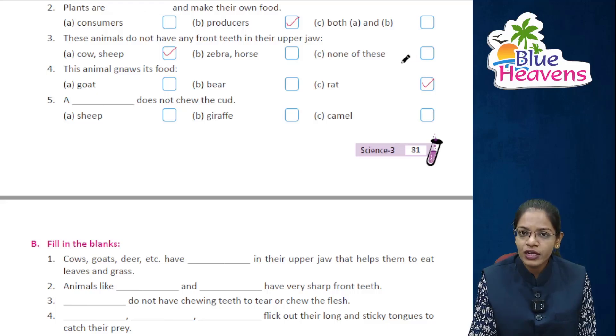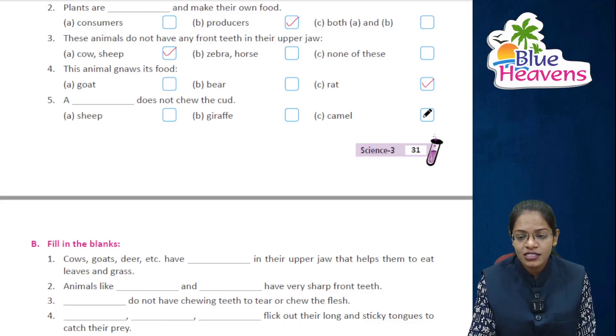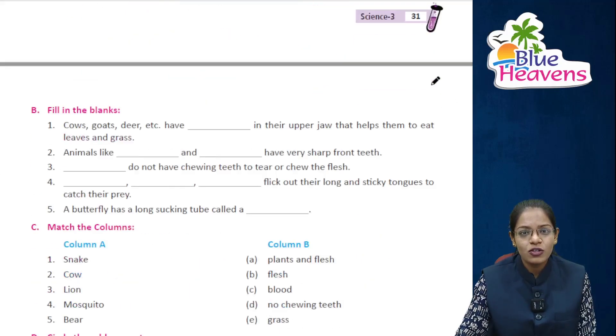Dash does not chew the cud — the answer is camel, which is not a ruminant — C is the right answer.